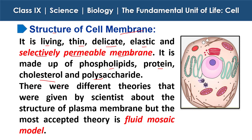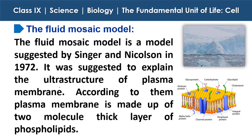There were different theories given by scientists about the structure of the plasma membrane, but the most accepted theory is the fluid mosaic model. The fluid mosaic model was suggested by Singer and Nicolson in 1972 to explain the ultrastructure of the plasma membrane. According to them, the plasma membrane is made up of a two-molecule-thick layer of phospholipids.